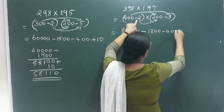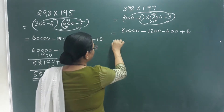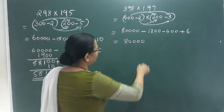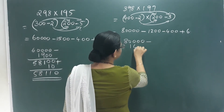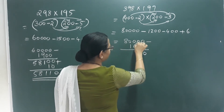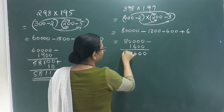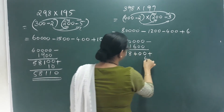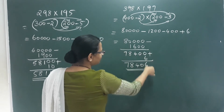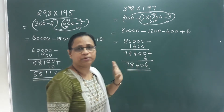This is minus 400. This is plus 6. Minus into minus equals 6. So 200 and 400 gives 600. We get 80,000 minus 1,600 minus. The digits are: 0, 0, 1, 6, 4, 9, 8, 7, plus 6. The answer is 78,406.